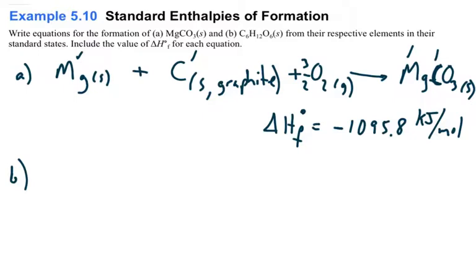So, the elements are going to be carbon. And the carbon is going to be the graphite form. So, you're going to put carbon as a solid, graphite. The second element is hydrogen. And you'll notice hydrogen is a diatomic element, and it's a gas.